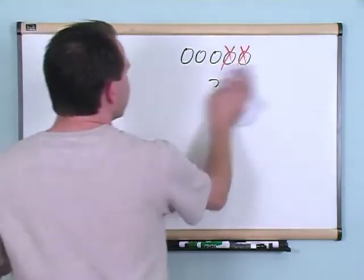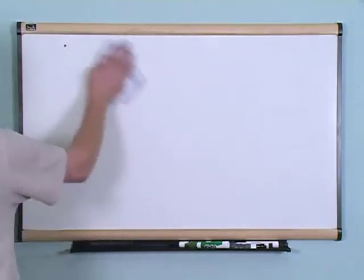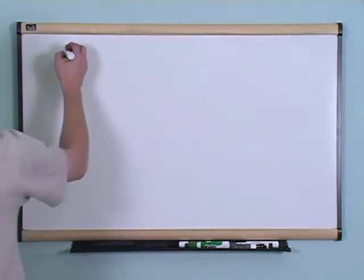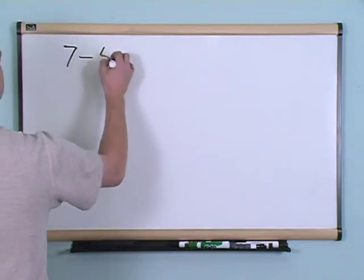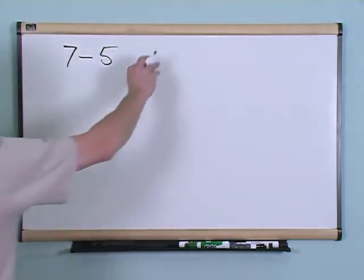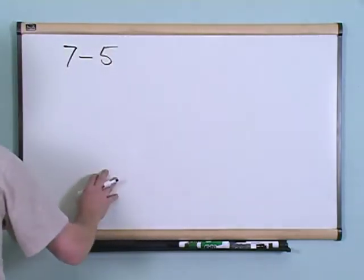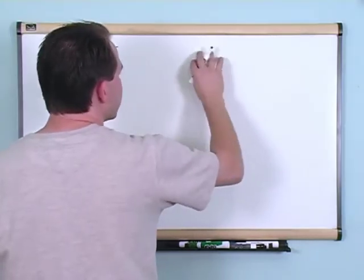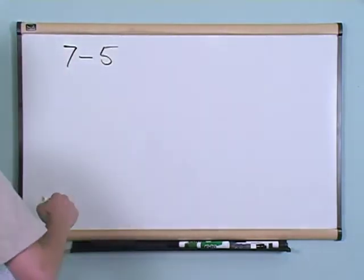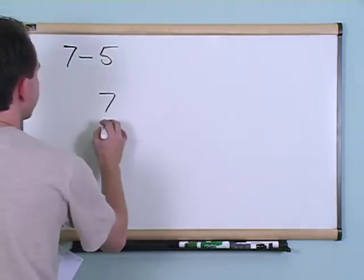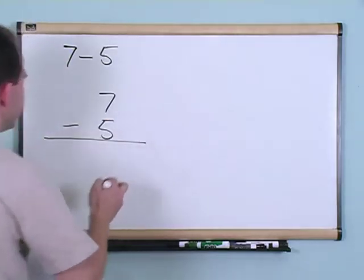Okay, so what we're going to do here is we're going to work some problems with subtraction of one and two-digit numbers. Now, let's say you have seven minus five. Now, I could put seven balls down, okay, and we could take five balls away, but what we're going to do is we're going to write them on top like this, okay?